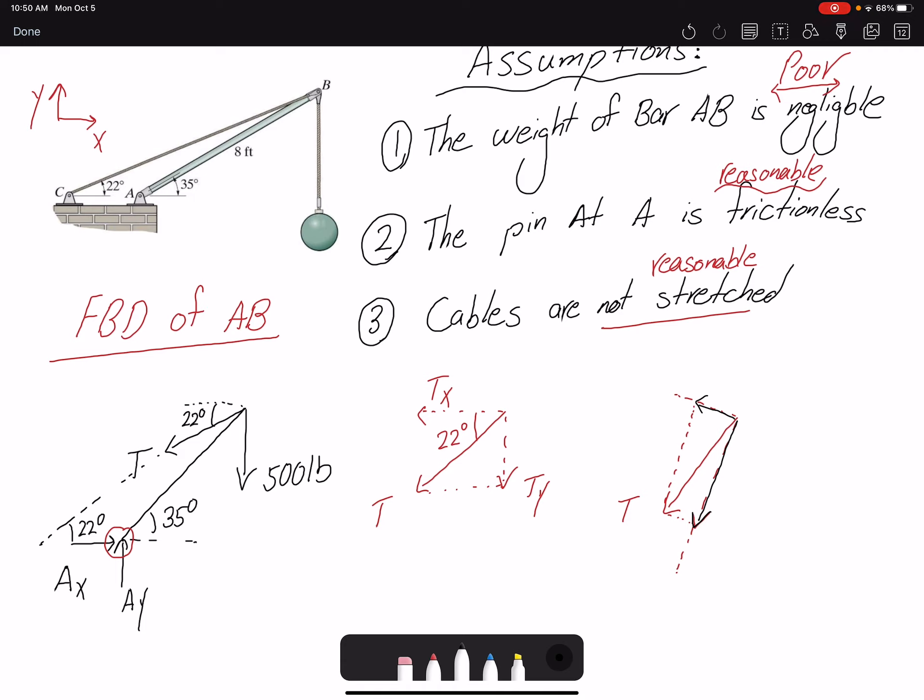The advantage here is that only this component, I'm going to call it T_AB perpendicular and T_AB parallel, only this component is going to create a moment about point A, and the moment arm is just simply eight feet.